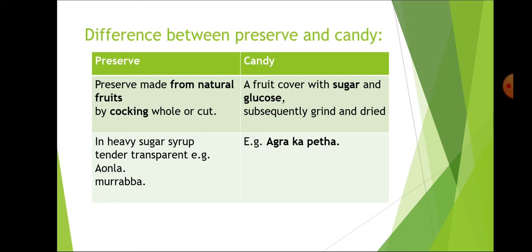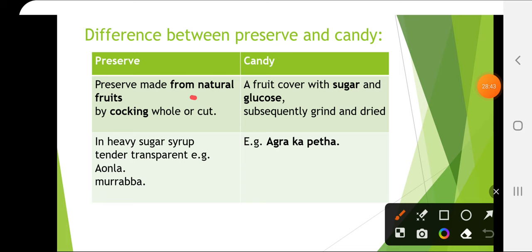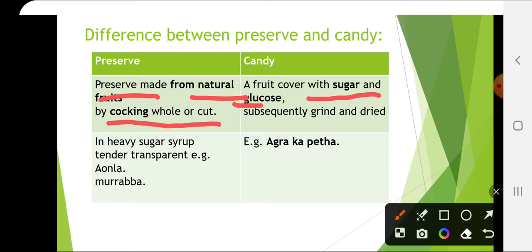Difference between preserve and candy: Preserve is made from whole or cut natural fruits in heavy sugar syrup — tender and transparent; examples are amla murabba. Candy is covered with sugar and glucose, then dried; example is Agra ka petha.